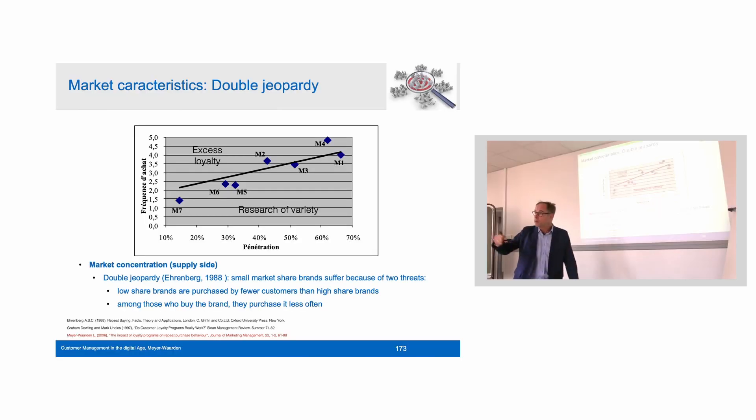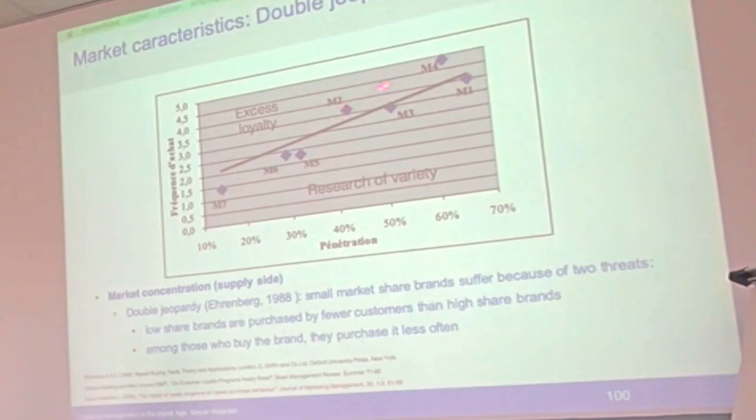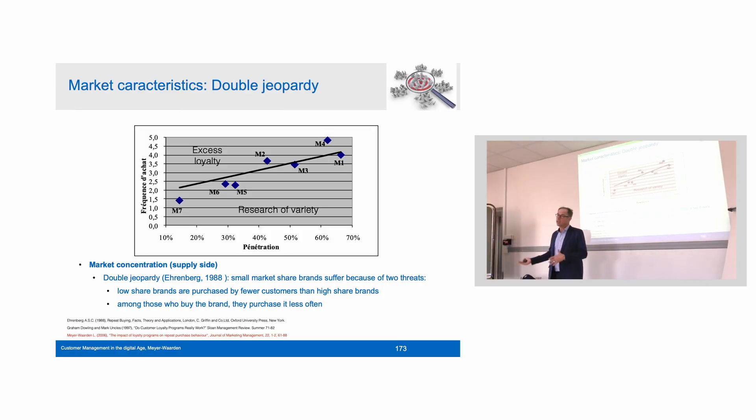And if you look at the small brands, they are actually hit three times, because they have less buyers, less loyalty, and their loyalty programs work less efficiently, because they're below this line. So the loyalty is even lower than it should be theoretically according to penetration. This shows clearly these three brands have double jeopardy. And the consequence of double jeopardy is that their marketing tools, including loyalty programs and sales promotions, work less well than the marketing actions for the leading brands, which are above the line. So it's even a triple jeopardy.